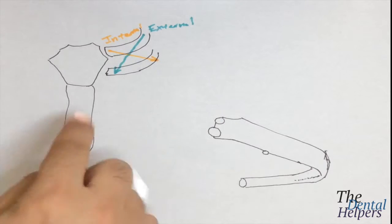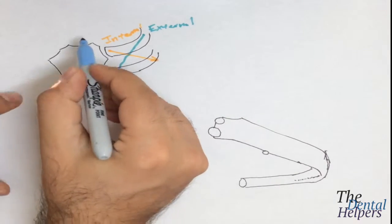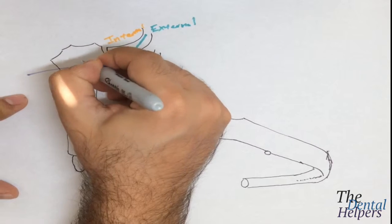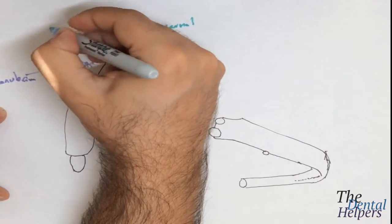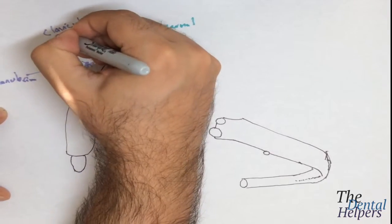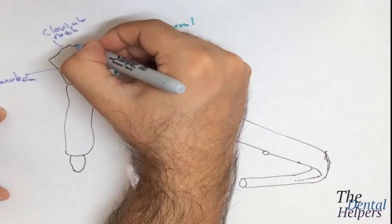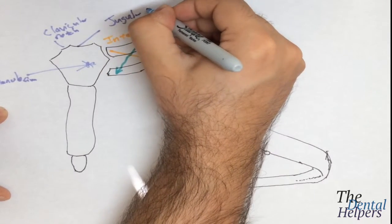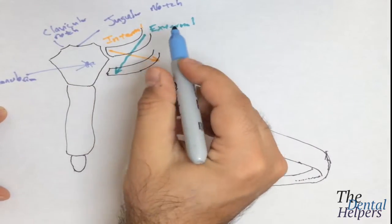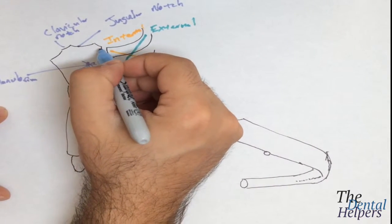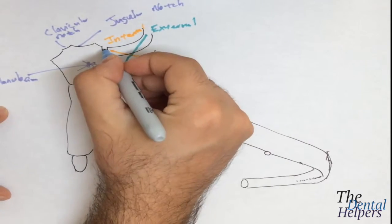We're going to quickly label the different parts of the sternum. This big bone right here is the manubrium. This part right here is the clavicular notch, where the clavicle is going to come in. This is the jugular notch, where the jugular vein passes down behind the sternum. Then we have the costal cartilage attachment for the first rib right here.